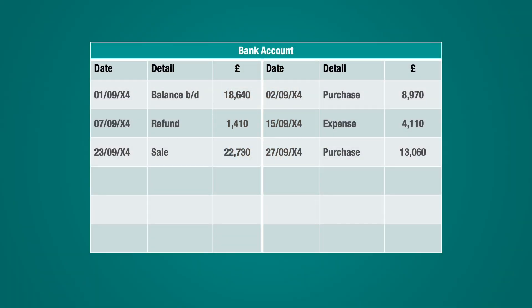Now let's have a look at a couple of examples to show you how it's done. You have been provided with the following bank account for Star Industries Limited. There are a number of transactions in the account and you've been tasked with balancing off the account at the end of the month. The first thing you need to do is add up all the debit entries — that gives us a total of £42,780. We'll then repeat the process for the credit column, which comes to £26,140. We can see that the debit entries are higher than the credit entries, so we can already say the account will have an overall debit balance, but at this stage we still don't know the actual balance.